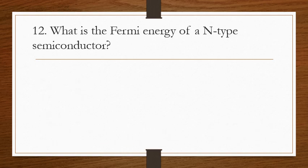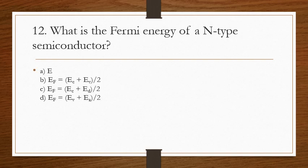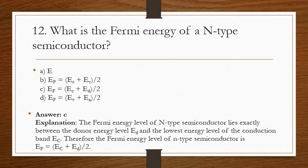Question 12: what is the Fermi energy of an N-type semiconductor? The answer is C. The Fermi energy level of the N-type semiconductor lies exactly between the donor energy level ED and the lowest energy level of the conduction band EC. Therefore, the Fermi energy level of the N-type semiconductor is EF = (EC + ED) / 2.